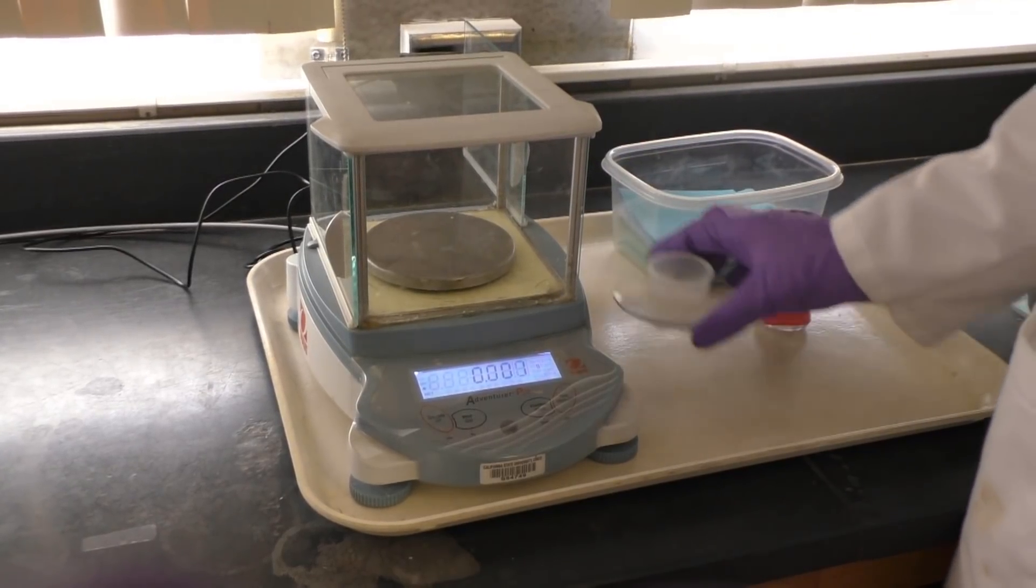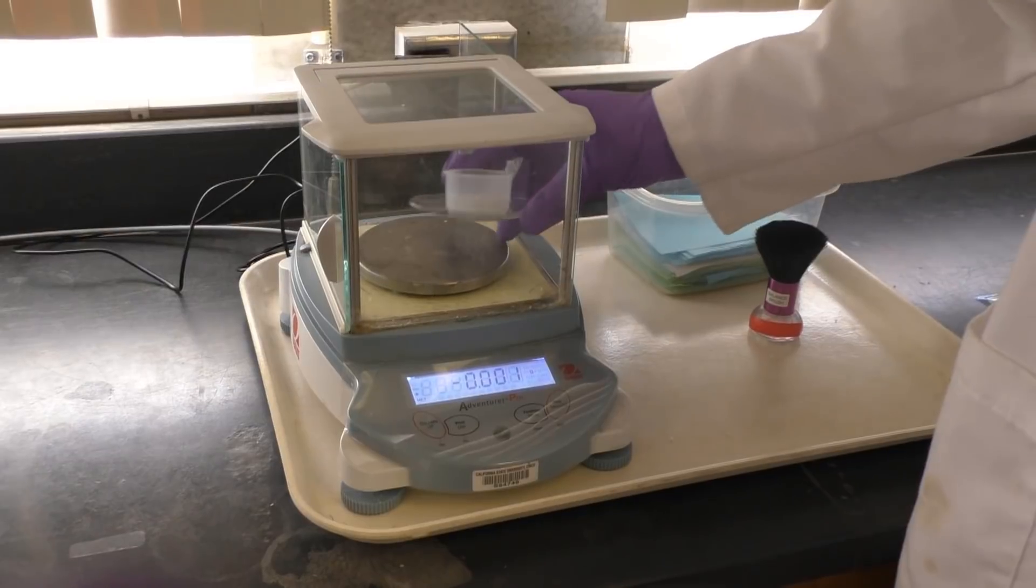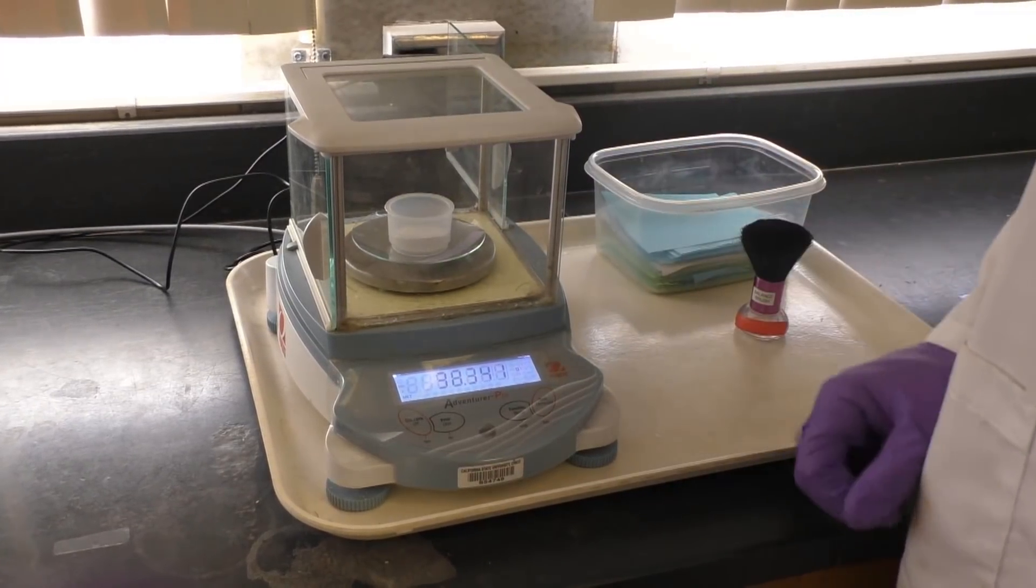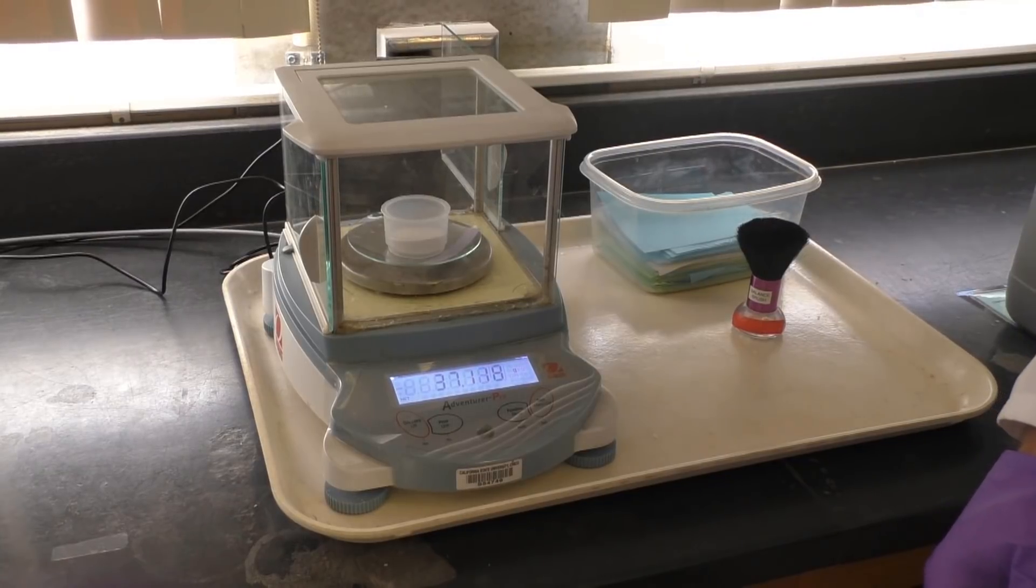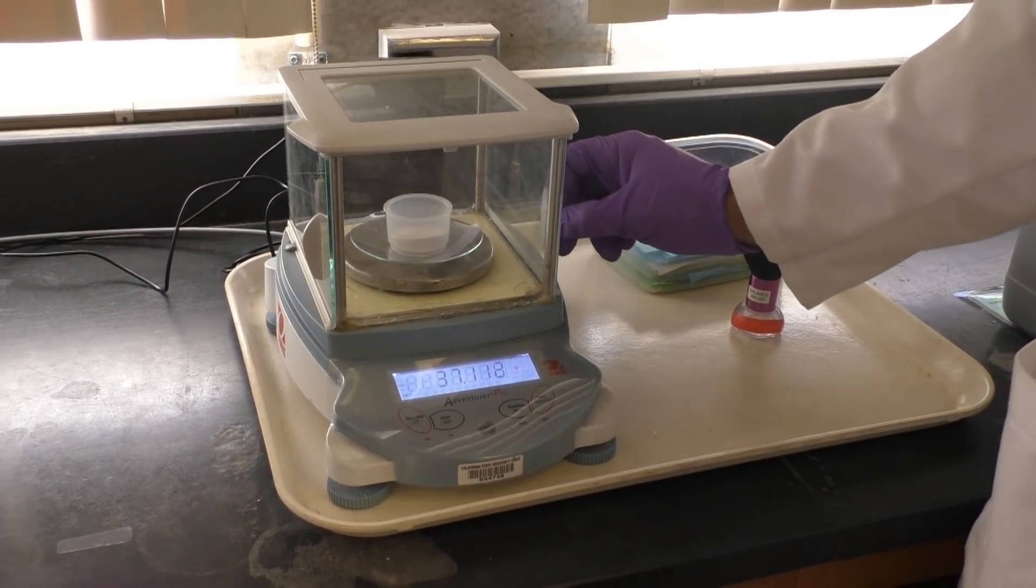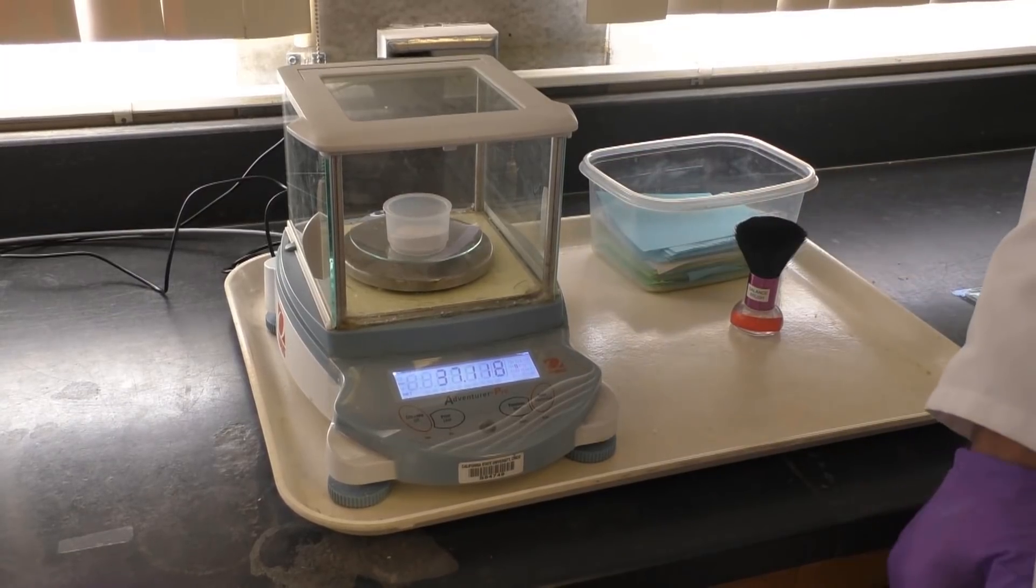While your solutions boil, get ready to isolate the desired precipitate. First both you and your partner will each want to weigh out and record the mass of your one Buchner funnel, a labeled watch glass, and filter paper. Be sure to keep your equipment separate from your partner's. Feel free to weigh each piece of equipment separately or altogether for your individual trial.